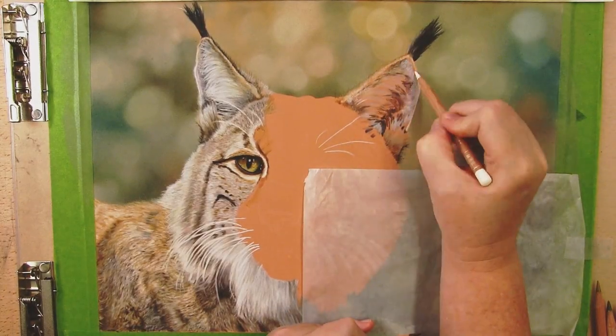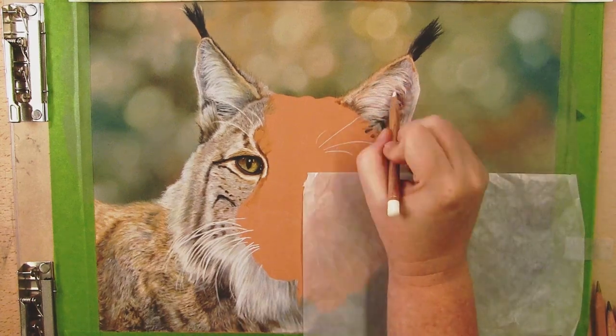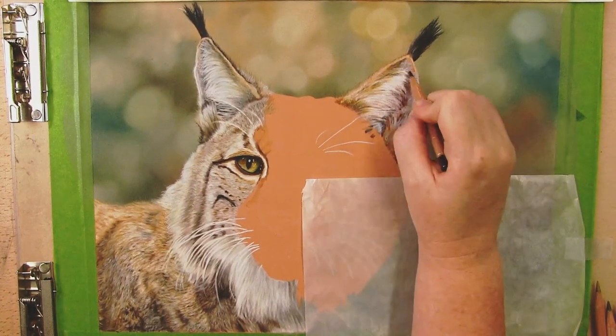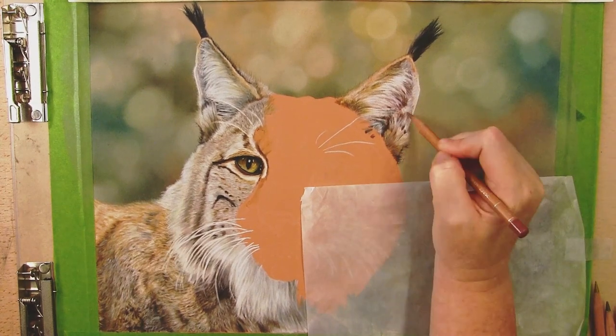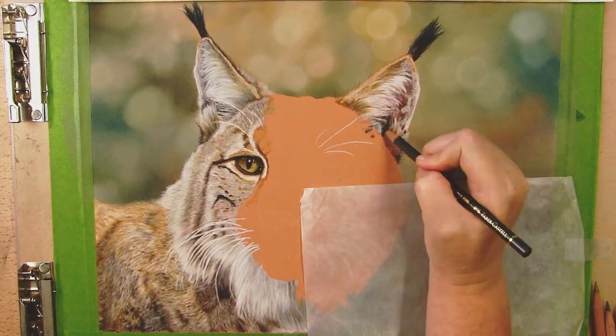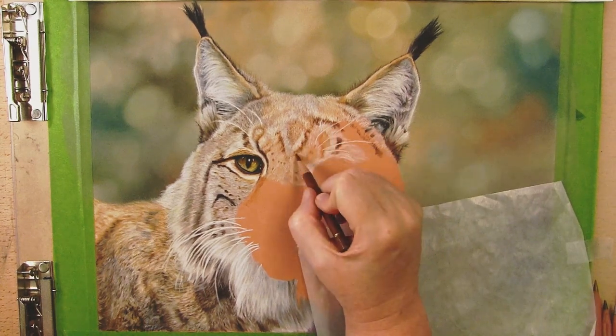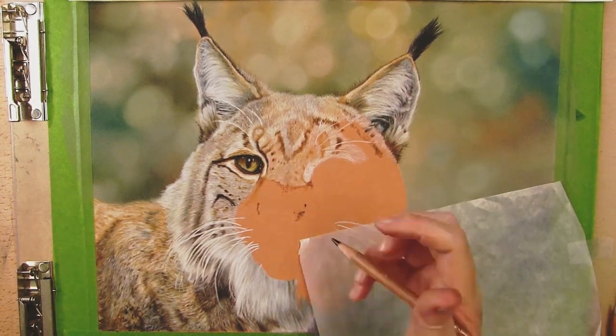I continued this same process for the other side of the face and ear and left the snout, nose, and mouth for last. Reasoning for this: it is the closest part to the viewer and in the foreground. Secondly it is part of the whitest area and I want to really preserve that white and take my time on the mouth.